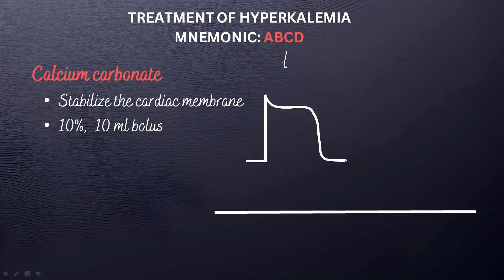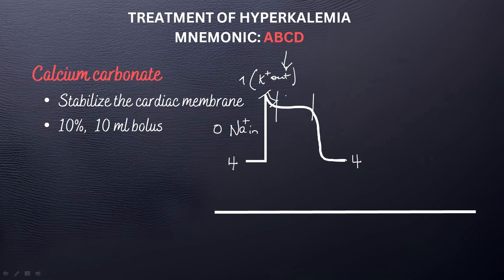What I have here is an action potential of the ventricle. We have phase 4, which is the resting membrane potential. Then phase 0, where there is a rapid influx of sodiums. We have phase 1, which is potassiums out, as well as chlorides also going out — so phase 1 is this slight decline. Then we have the plateau phase, where calcium comes in and potassiums go out. Now this part is very important, which is called the repolarization phase, and in repolarization you can see that the potassiums are also moving out.